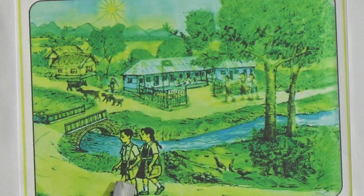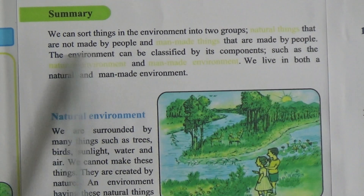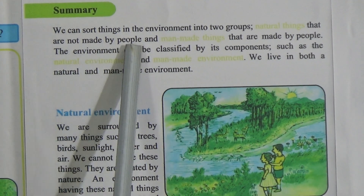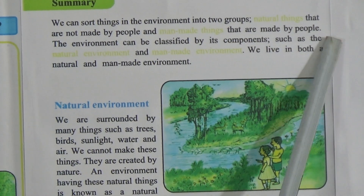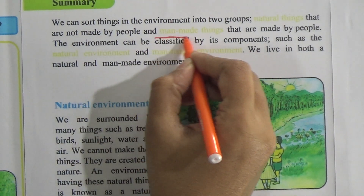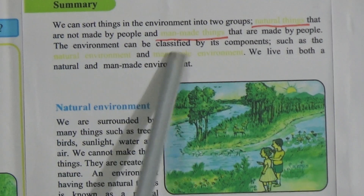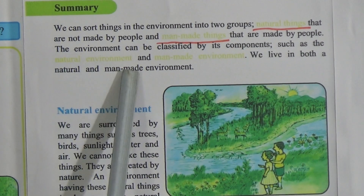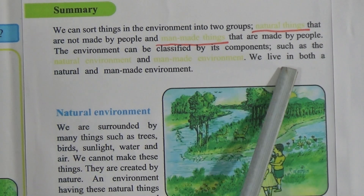We can sort things in the environment into two groups: one is natural things — things that are not made by people — and another is man-made things — things that are made by people. Those are the two types of environment. The environment can be classified by its components, such as natural environment and man-made environment. We live in both a natural and a man-made environment.